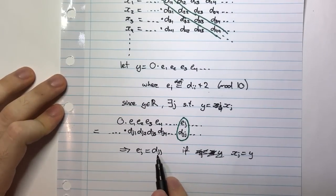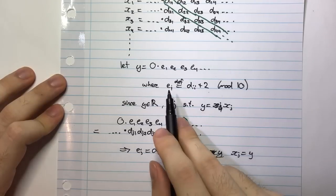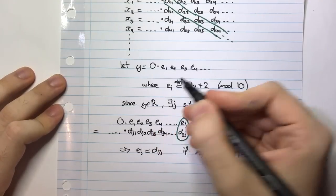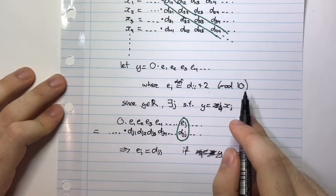If EJ is equal to DJJ, and EJ is defined as DJJ plus 2 mod 10, well,